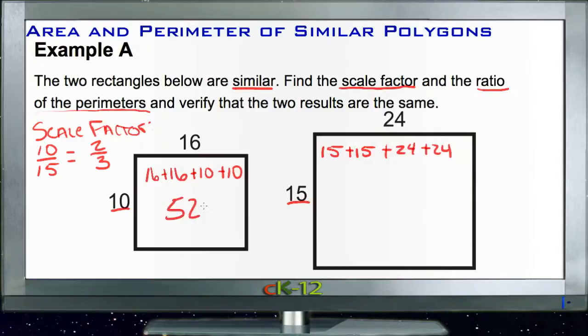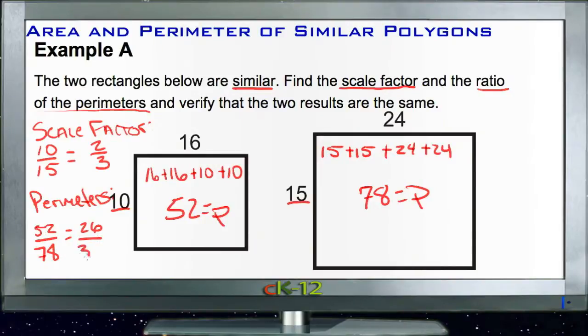So 32, 42, 52 equals the perimeter. And we have 30 and 48, that's 78 equals our perimeter. So if we have our perimeters, they compare as 52 out of 78.